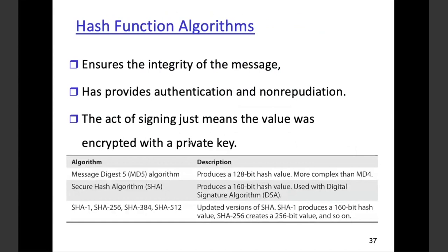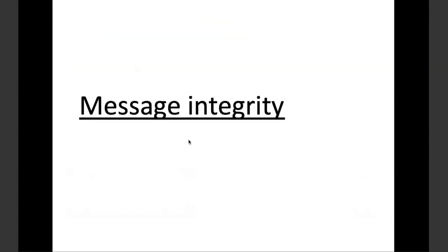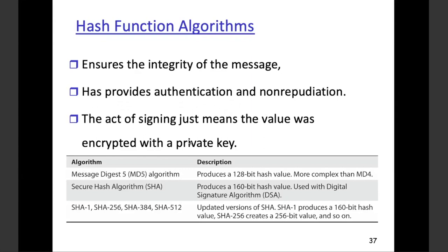Then comes the hashing function. Hashing functions convert data to some other form — they provide integrity, authentication, and non-repudiation. Encryption can be decrypted, but hashing functions are one-way functions: you hash a value, a value comes out, and it's irreversible.